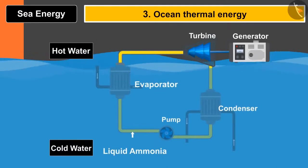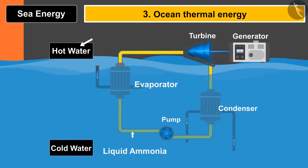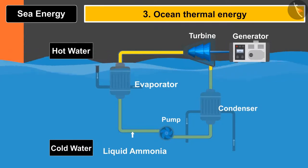In ocean thermal energy, rays coming from the sun fall on the ocean and make the uppermost layer hot and increase the temperature of that layer. Conversely, the lower layer of water is still cold. This change in temperature is used to rotate the blades of the turbine.